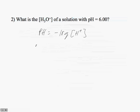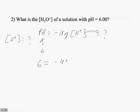But we're told the pH. pH in this instance is equal to 6, and we want to find out what's the hydronium ion concentration. So our hydronium ion concentration is what's in question.